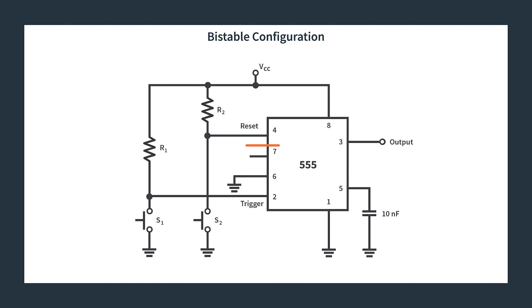You'll notice that pin seven, we can just leave floating. That is the discharge pin that you can discharge a capacitor through, but we will not be using that. Then pin six, which is our threshold, which is one of our basic input pins, is tied to ground. We don't even use the upper comparator at all in this configuration. We only use the reset on the SR flip-flop and the trigger which controls the bottom comparator.